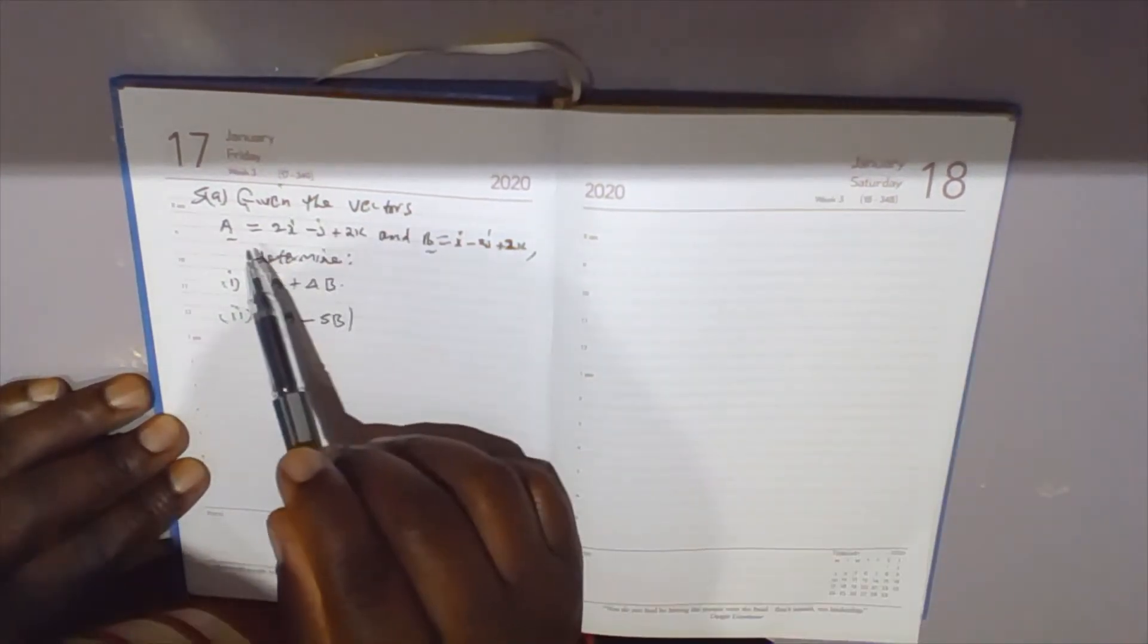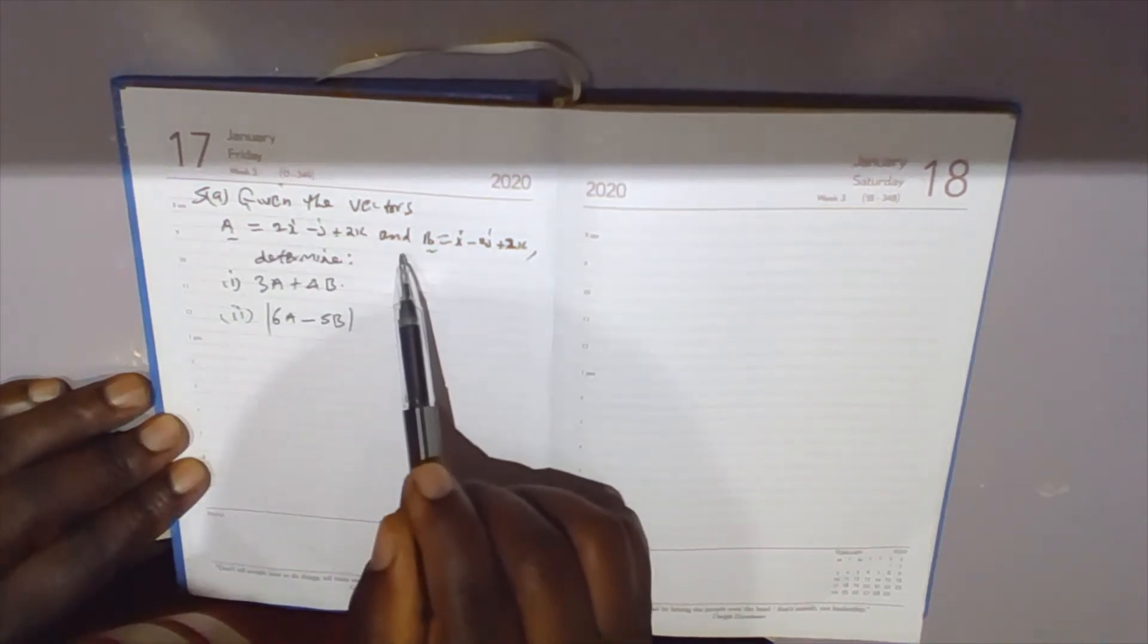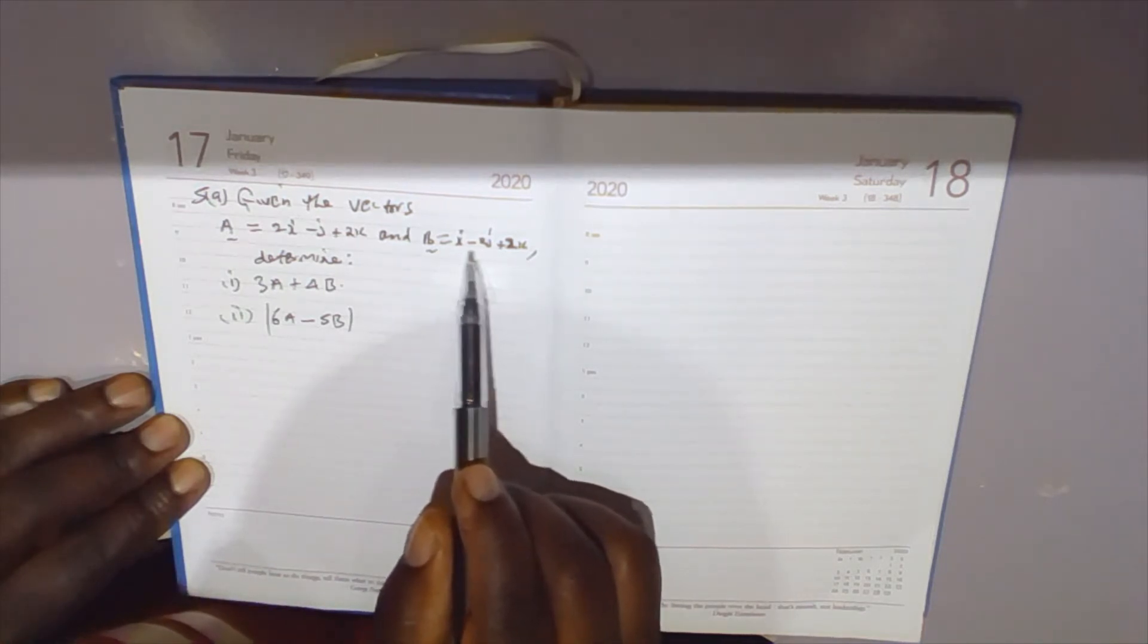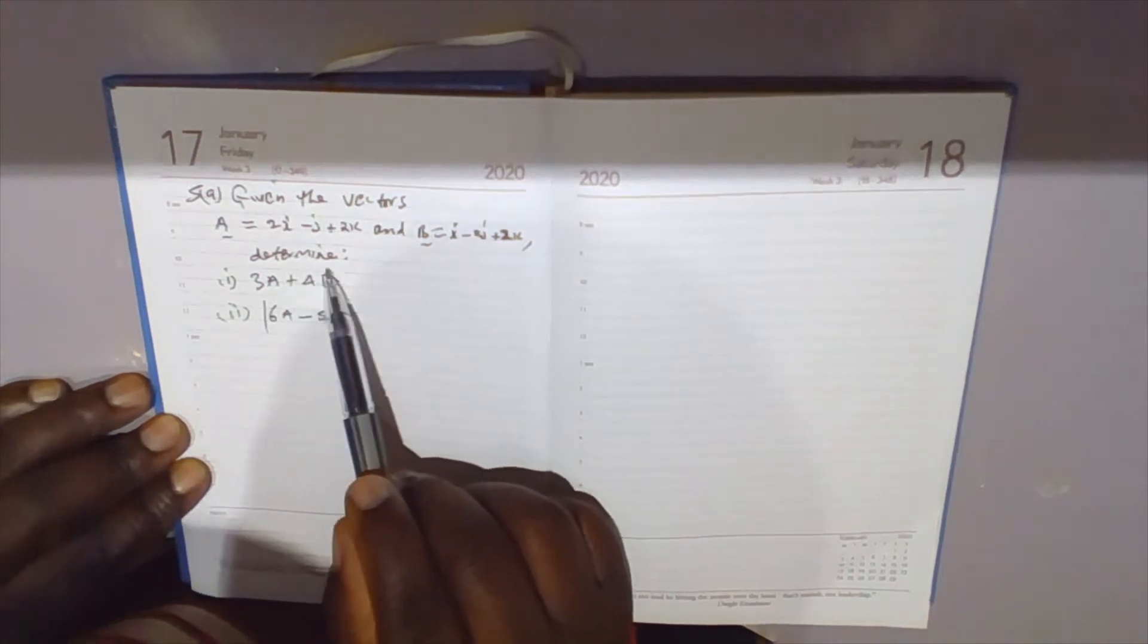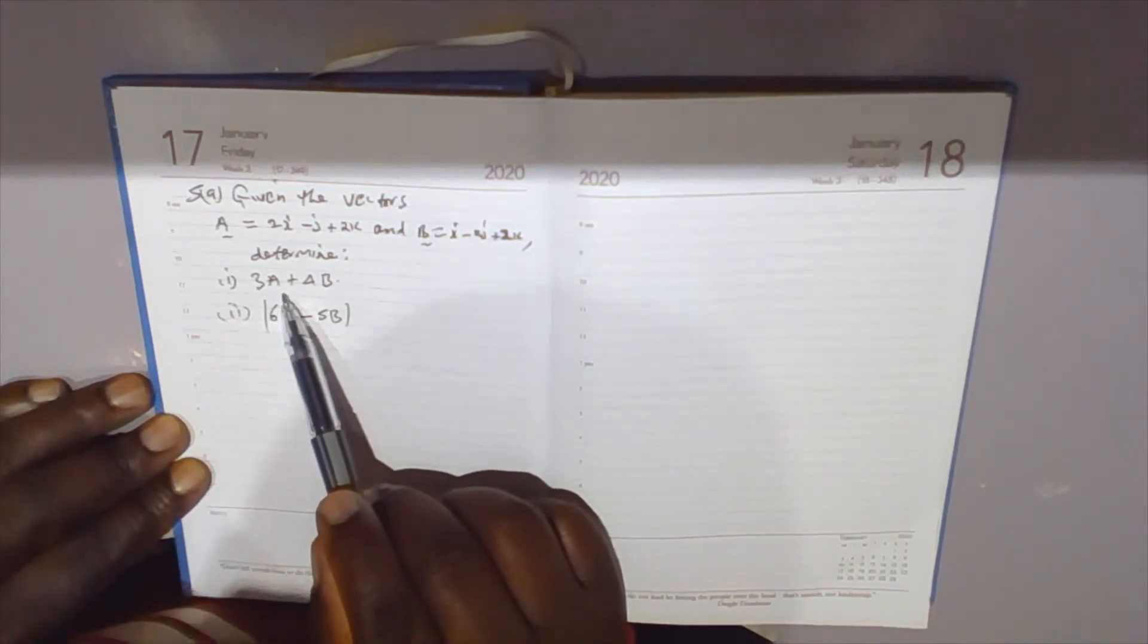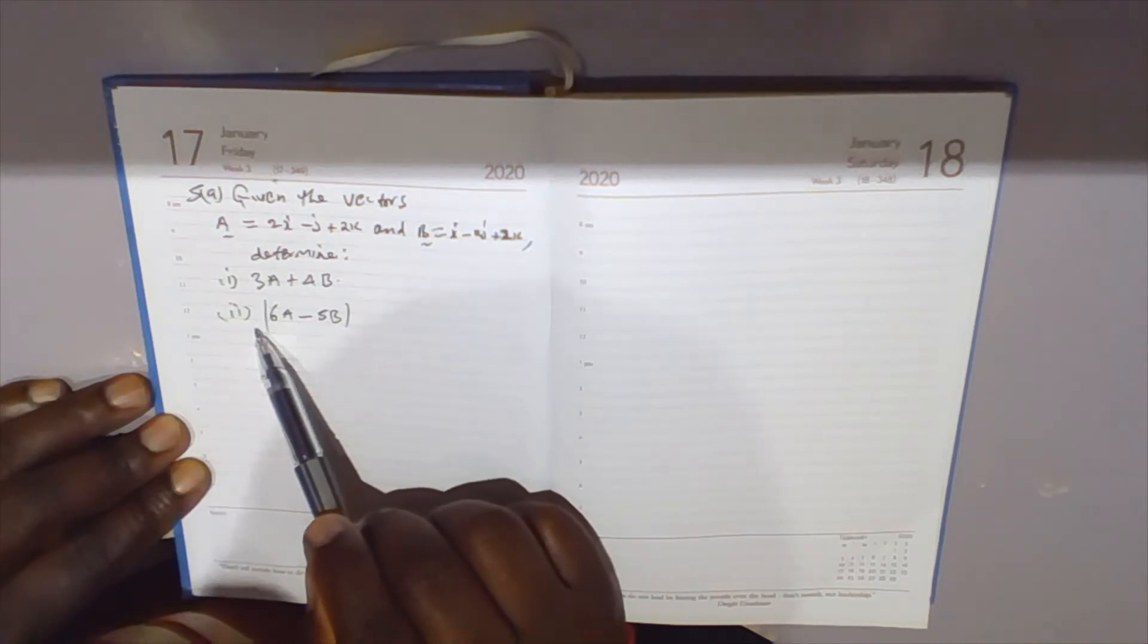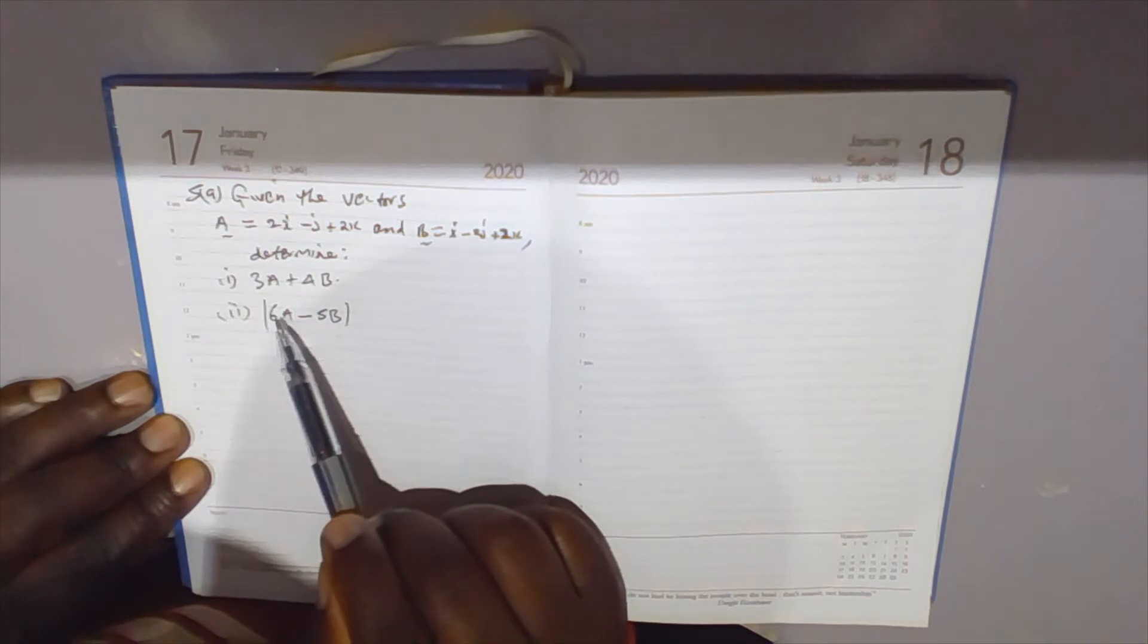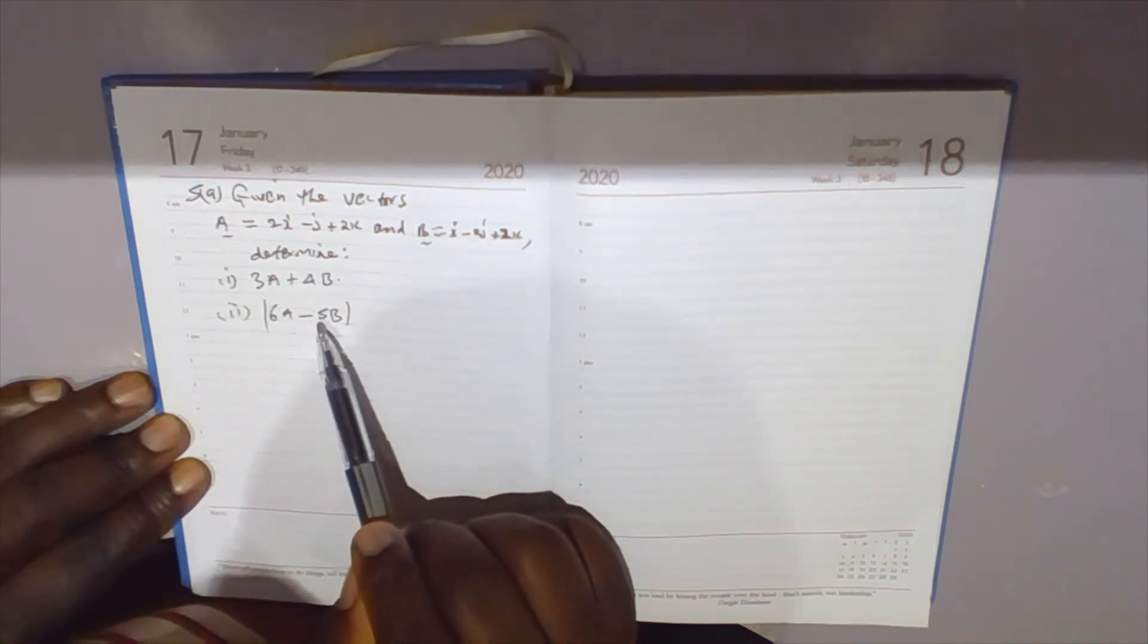Given the vectors: vector a equals 2i - j + 2k, and vector b equals i - 2j + 2k. They want us to determine 3a plus 4b. Then part two: find the modulus of 6a minus 5b.